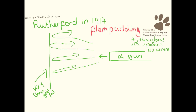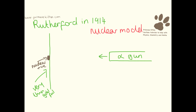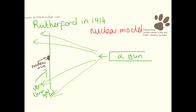You would expect that all the alpha particles would just come straight back if the plum pudding model was correct and there was a positive charge all over the place. What they actually found is that most of them went straight through, which was quite weird because this is not what they were expecting. And then occasionally you'd get a few that were a little bit deflected.